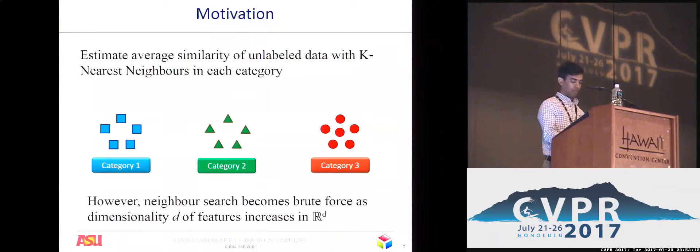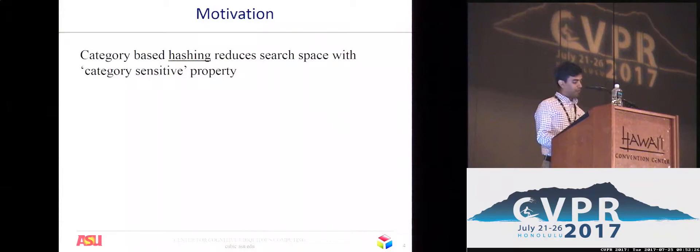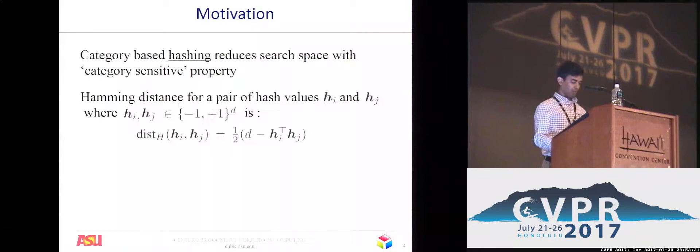We overcome this problem by resorting to hashing. We work in a hash space where we force all data points in a category to have similar hash values. We then sample any of the K points, thereby avoiding a nearest neighbors search.